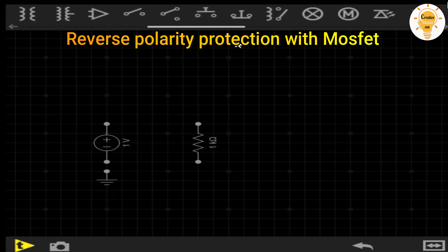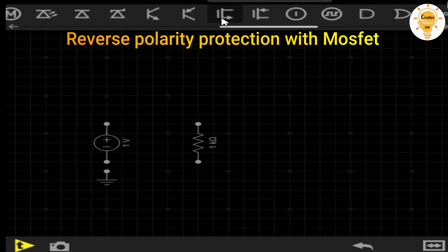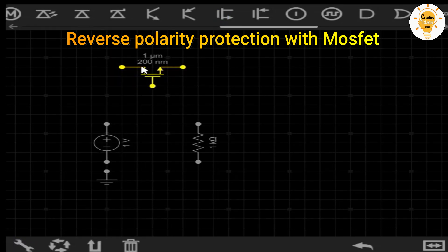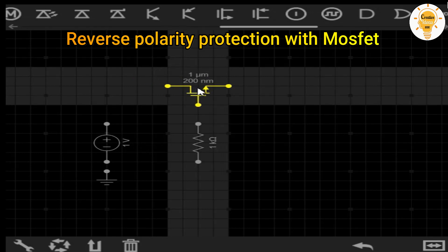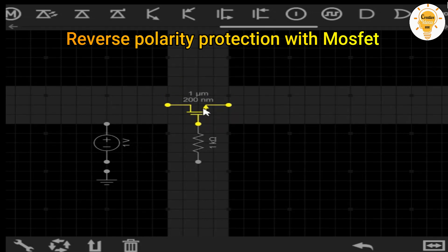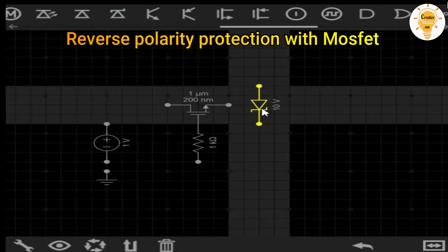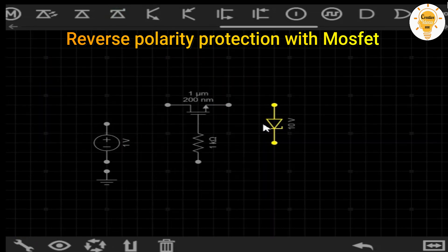We will connect our source to the drain pin, the load to the source pin, and the gate pin we will connect to the ground. To avoid damage to the MOSFET in the case of using a voltage higher than that tolerated, we will use a Zener diode together with a limiting resistor.